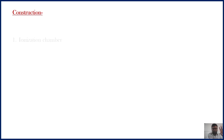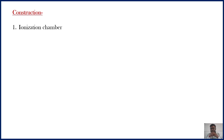Now let us see the construction of Bainbridge mass spectrograph. In the case of Bainbridge mass spectrograph, there are mainly four parts. The first one is the ionization chamber. As the name suggests, the ionization chamber is generally used to produce ions. The material which is under study is taken in the form of gas in the ionization chamber. With the help of potential difference, the gas is ionized and positive ions having charge plus one E are formed in the ionization chamber.